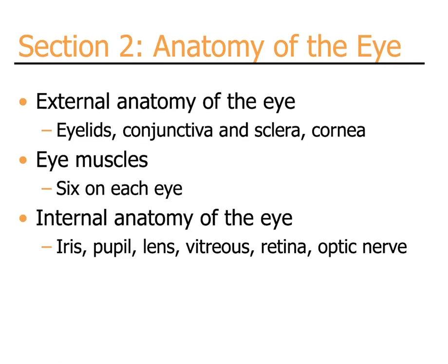The internal structures include the iris, the pupil, the lens, the vitreous gel, the retina — which makes the picture — and the optic nerve, which carries the picture to the brain.